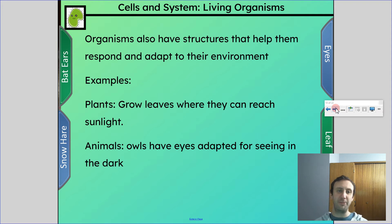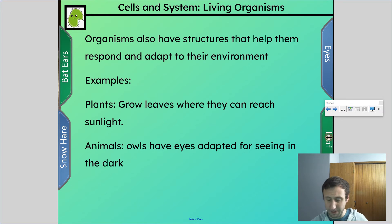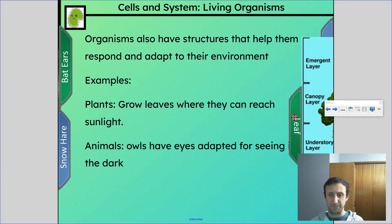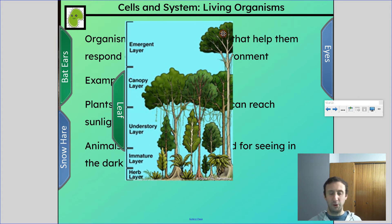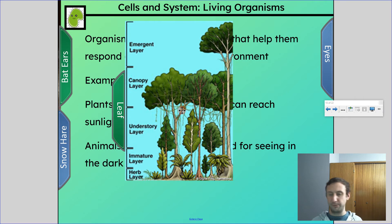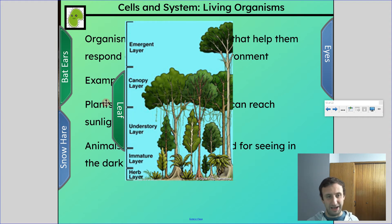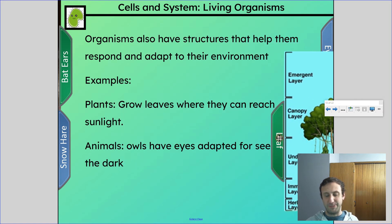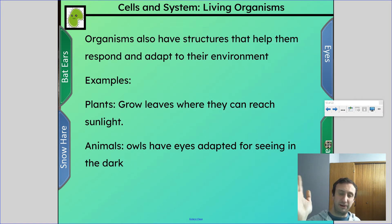Organisms also have structures that help them respond and adapt to their environment. Plants grow leaves where they can reach sunlight, and they have mechanisms for this involving chemical transmitters. Different leaves grow at different heights depending on the plant's strategy for getting sunlight — in the rainforest, some plants even climb up other plants to get to the sun because things are so dense. You also saw the video of plants moving towards sunlight throughout the day — that's part of it as well.